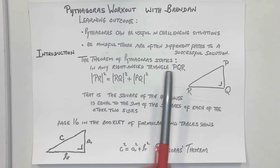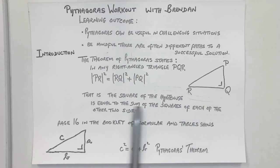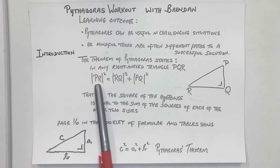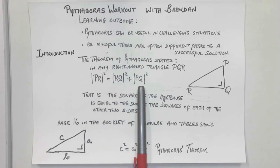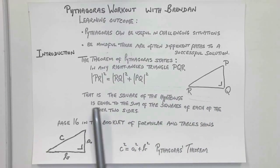The theorem of Pythagoras states that in any right angle triangle, here I've got PQR with the right angle marked, that PR squared is equal to RQ squared plus PQ squared. Most people will be very familiar with that. In English, the square of the hypotenuse is equal to the sum of the squares of each of the other two sides.